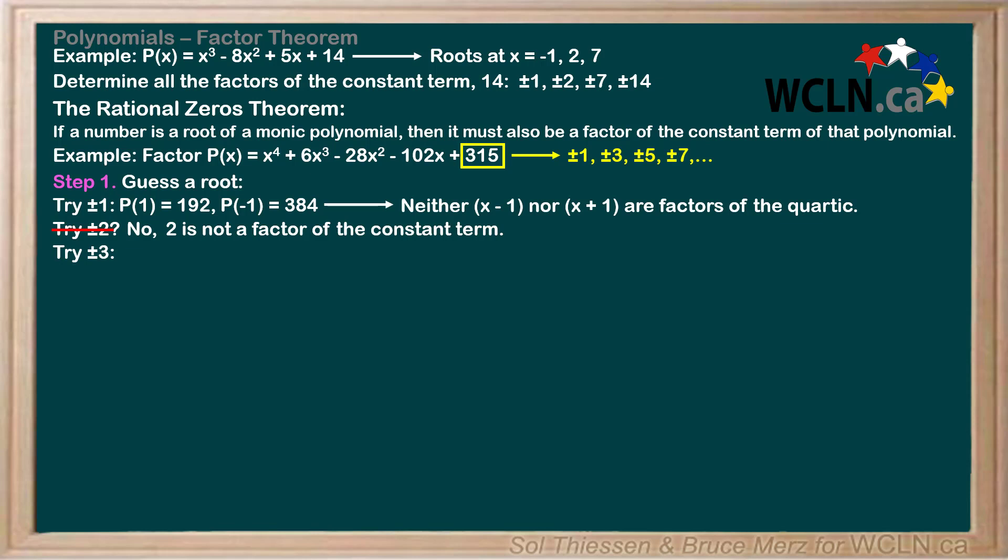Okay, let's try 3 and negative 3, since we know 3 is a factor of the constant term, 315. Substituting 3 in gives us 0. Hooray! This means that 3 is a root, and we've found a corresponding factor of x minus 3, not x plus 3.